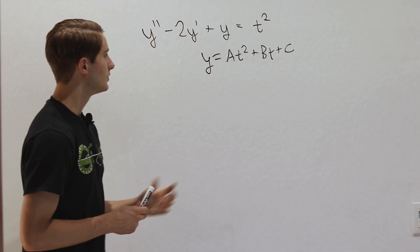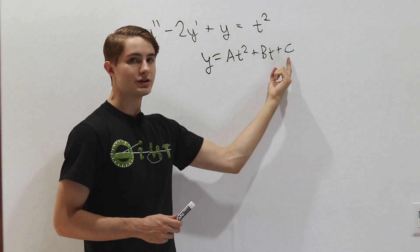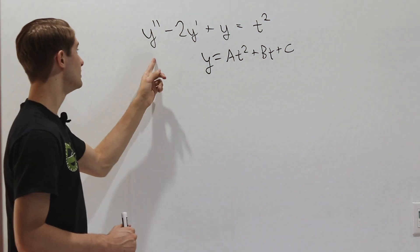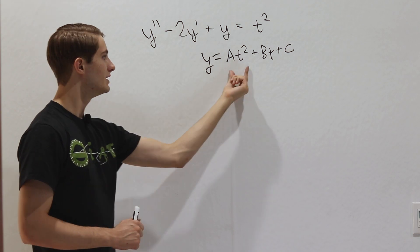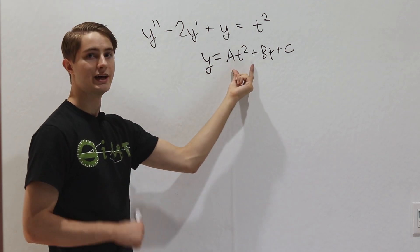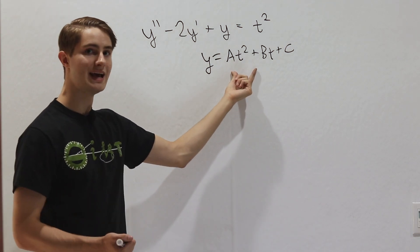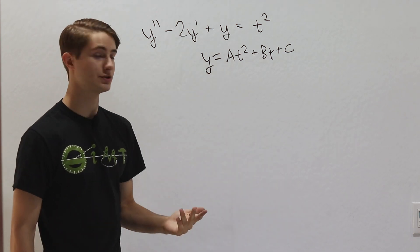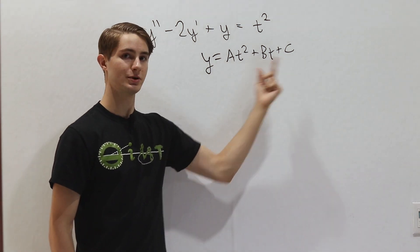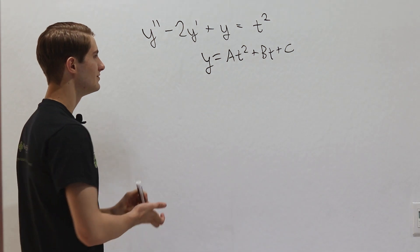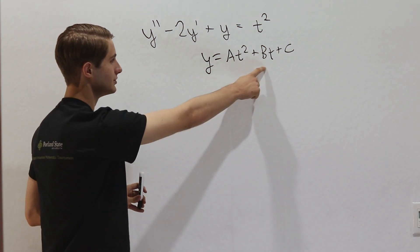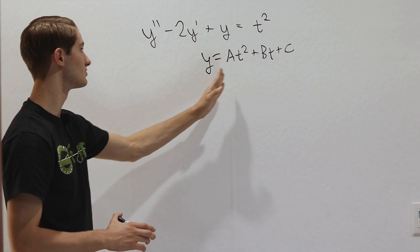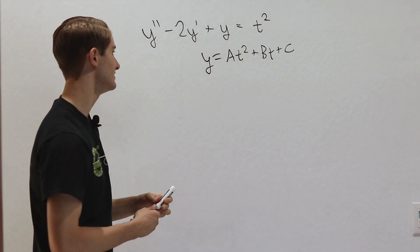You might wonder why there's a bt plus c term. The reason is that once we differentiate y, y double prime and y prime will contain 2at and 2a from differentiating at squared. The bt and c terms are there to cancel those parts out. Since we've guessed this solution form, we can take derivatives and plug in to solve for constants a, b, and c.